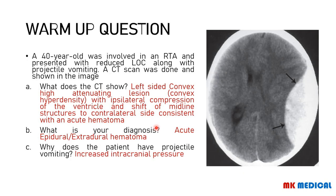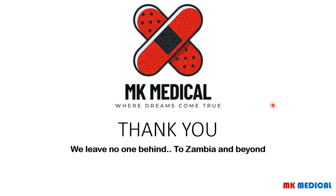Coming back to our warm-up question: a 40-year-old involved in a road traffic accident with reduced level of consciousness and projectile vomiting. On the CT scan, this is the left side and this is the right side. What we see is a left-sided convex high-attenuating lesion — a convex hyperdensity — with ipsilateral compression of the ventricle and shift of the midline to the contralateral side. This is most likely consistent with acute hemorrhage, as acute blood appears hyperdense on CT. This is most likely an acute epidural or extradural hematoma, and the projectile vomiting is due to raised intracranial pressure.